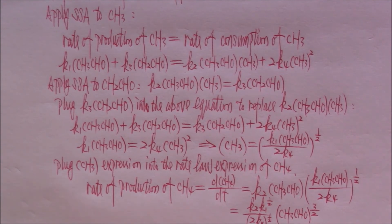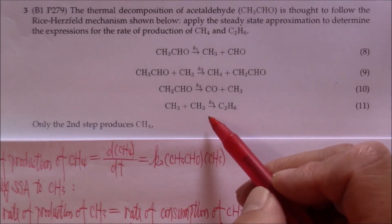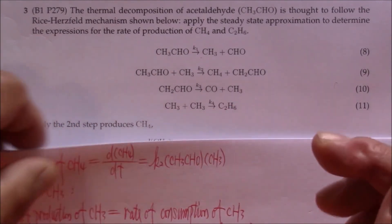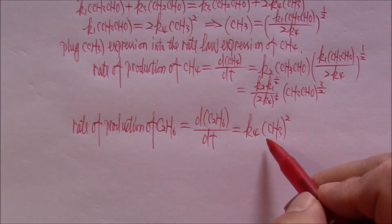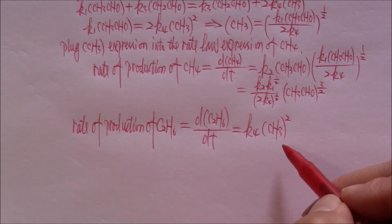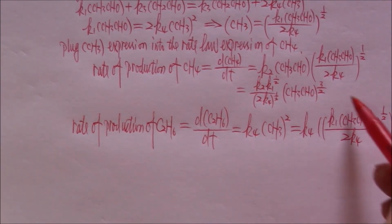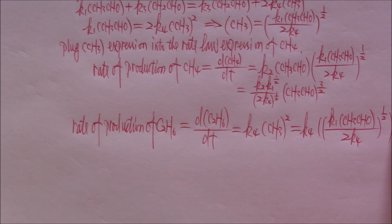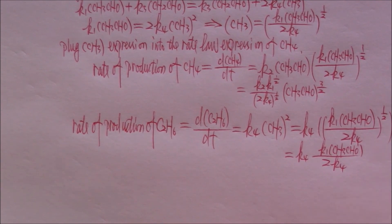Now let's work out the rate of production of C2H6. When we look at the elementary reactions, only the last step will produce C2H6. Let's put down the rate law expression for C2H6. Since we already know the expression of the concentration of CH3, we can just plug it in. The expression for CH3 is half power, and this is second power, so when they multiply each other it equals 1. K4 and K4 will cancel, and we can simplify this into the final form.